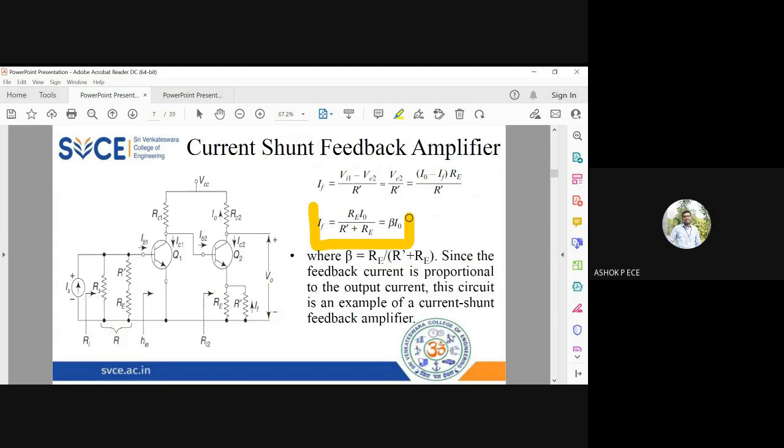So this IF equal to beta into I naught, so beta is going to be RE by R dash plus RE. So if R dash is not there, if R dash equal to zero, then beta will be equal to 100% feedback happens. So since the feedback current is proportional to the output current, this is the perfect example of current shunt feedback amplifier.